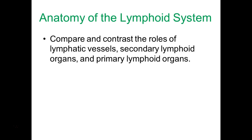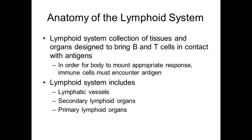We have secondary lymphoid organs. As the name implies — lymphoid — we've been talking about lymphocytes, B cells and T cells; these are their major homes in our body. And then our primary lymphoid organs, where it all begins — primary meaning beginning. Our lymphoid system is very important to the design and functionality of our B cells and T cells, effectively doing their job of coming in contact with antigen and responding to it appropriately.